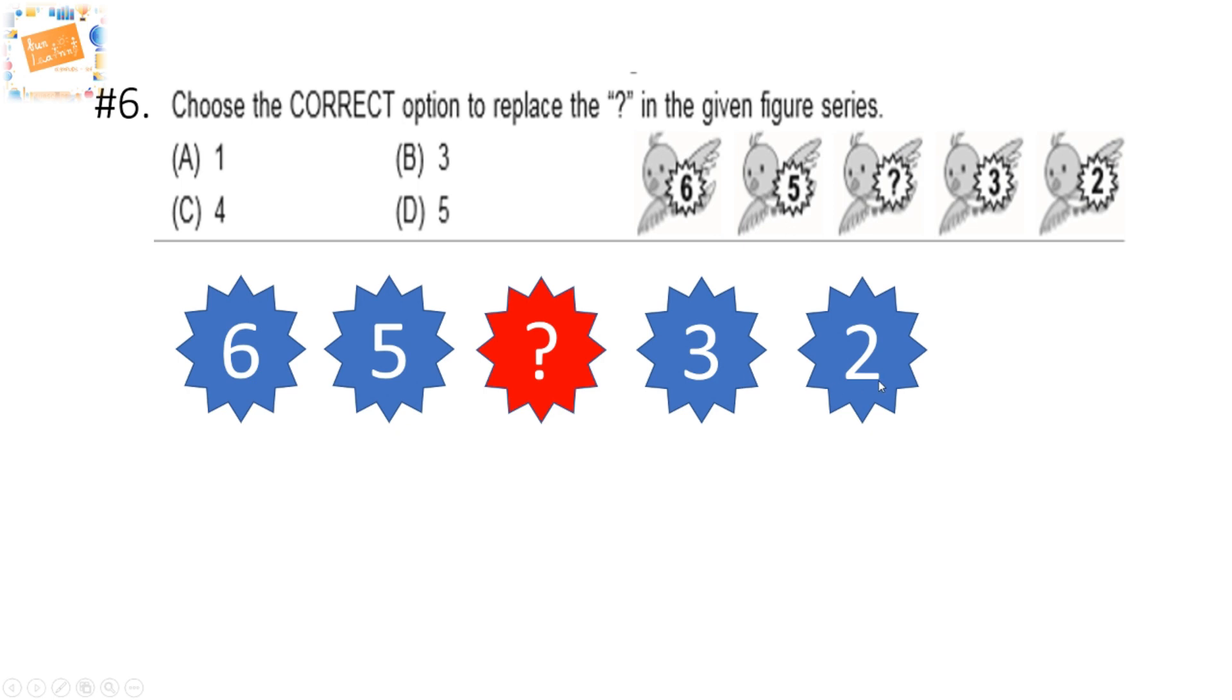So you've chosen your answer. Now let's match it. If you look at this pattern, it's reducing 6 by 1, and the same for 5, 4, 3, and 2. So both of these are reducing by number 1. If we continue this pattern, 6 minus 1 is 5, 5 minus 1 is 4, 4 minus 1 is 3, and 3 minus 1 is 2. So our answer, 4, is correct.